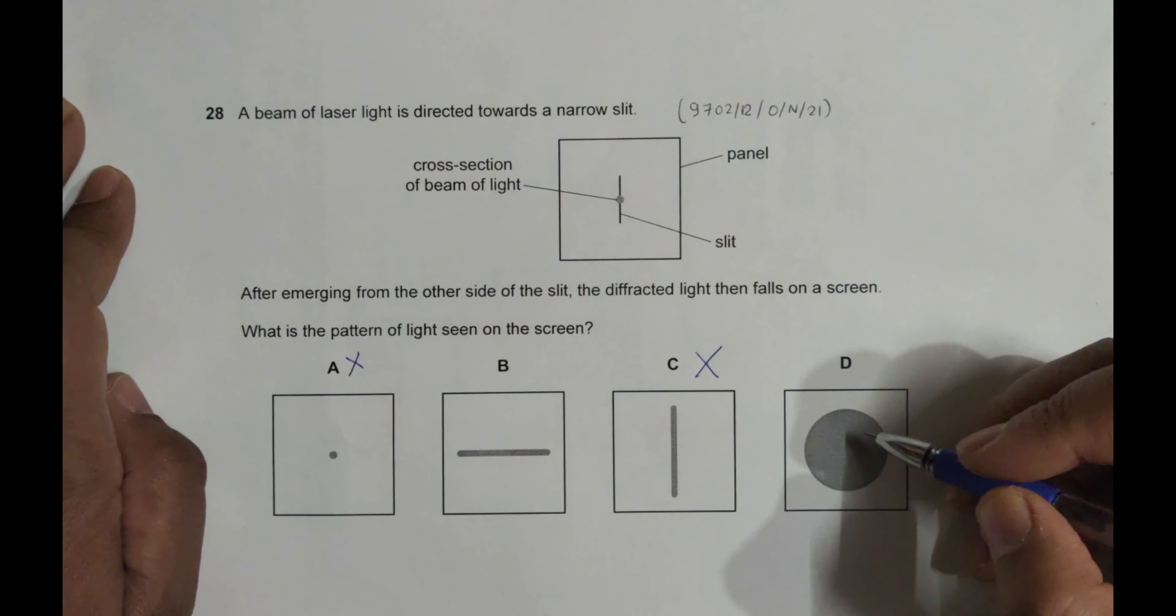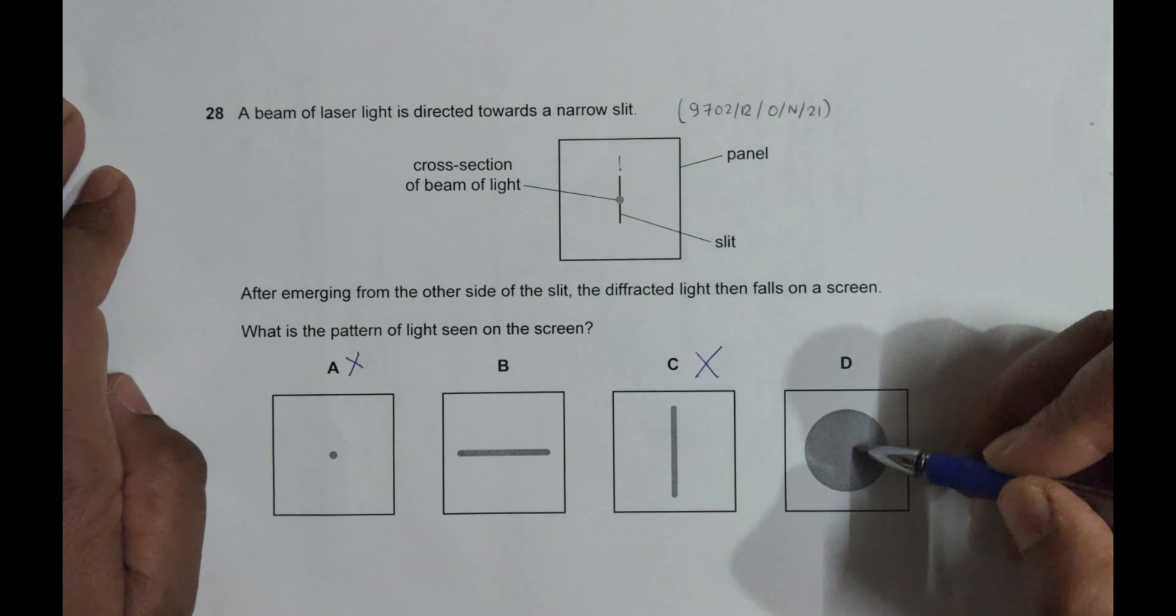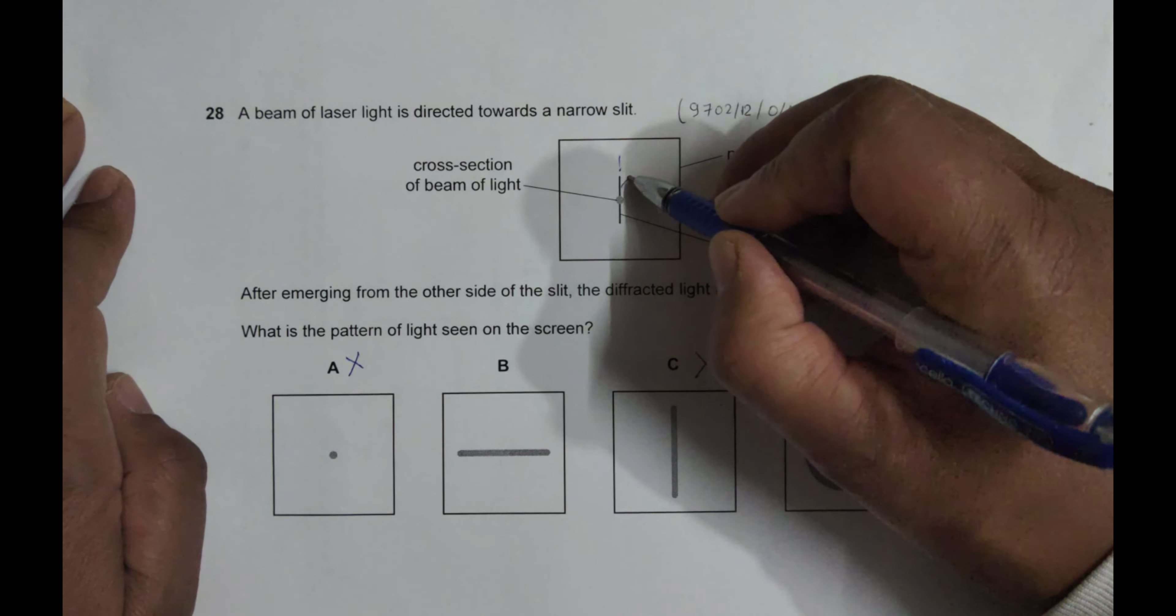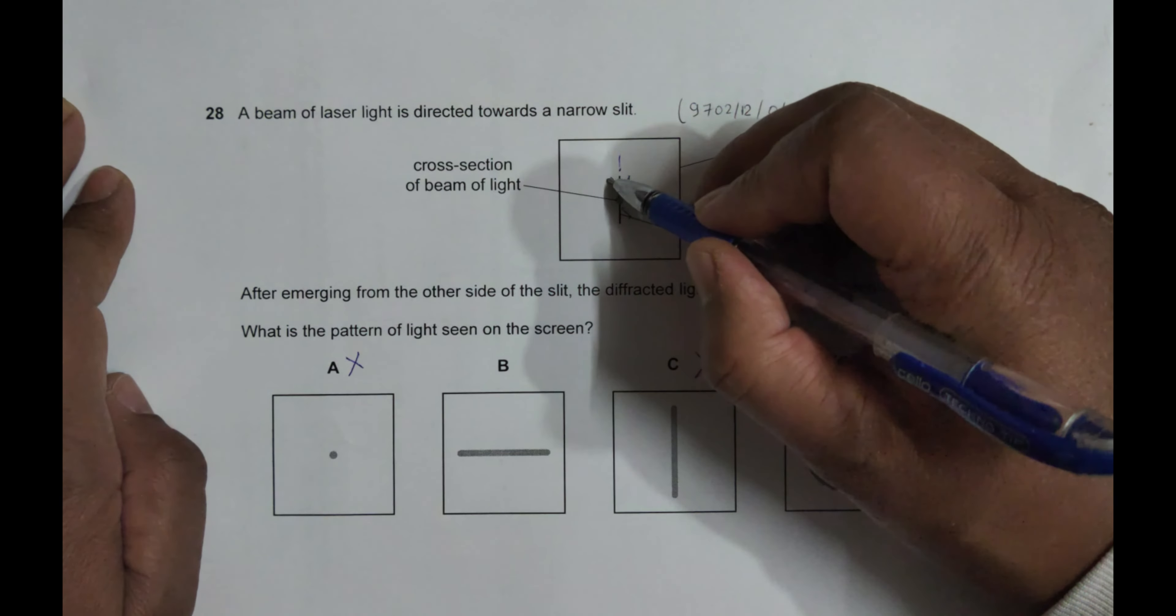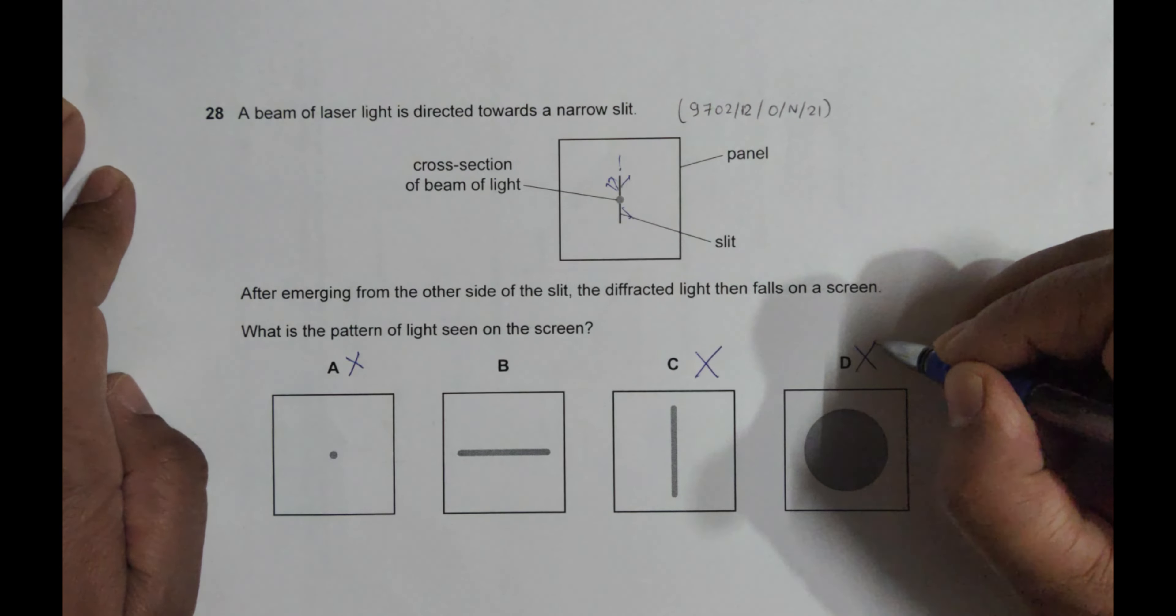And D is a circle. Circle means in this direction also there is diffraction here. In this, there is also diffraction. Everywhere is diffraction, which is not true. And it's happening equally. It cannot be equal. So that's why this is also not true.